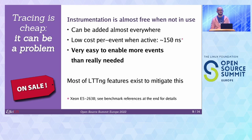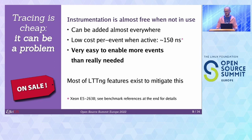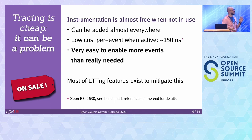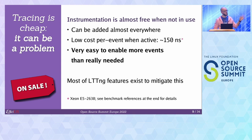All of this means that tracing is super cheap. The instrumentation in the code is almost free when it's not in use — basically a load and a correctly predicted branch. When it is enabled, on a fairly old Xeon, tracing a timestamp and an integer payload takes roughly 150 nanoseconds. It's the same ballpark for both the user space tracer and the kernel space tracer.